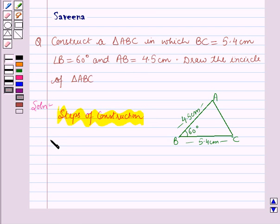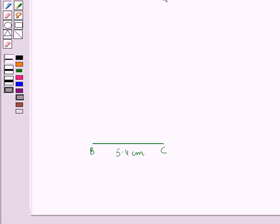In the first step, we will draw a line segment. Here, BC is equal to 5.4 cm. As you can see here, we have drawn a line segment BC equal to 5.4 cm.